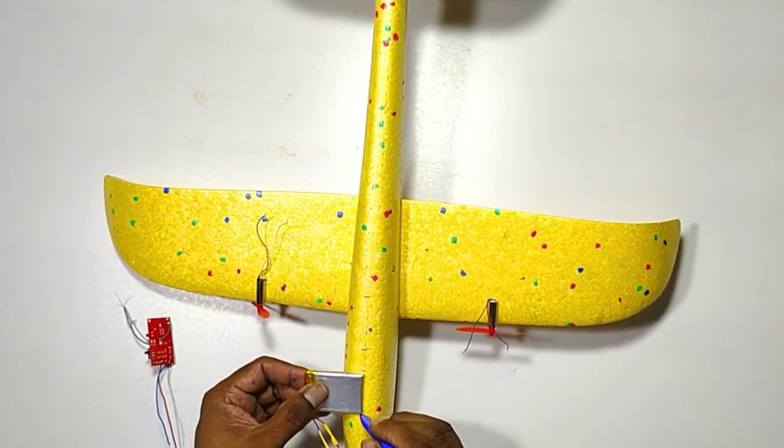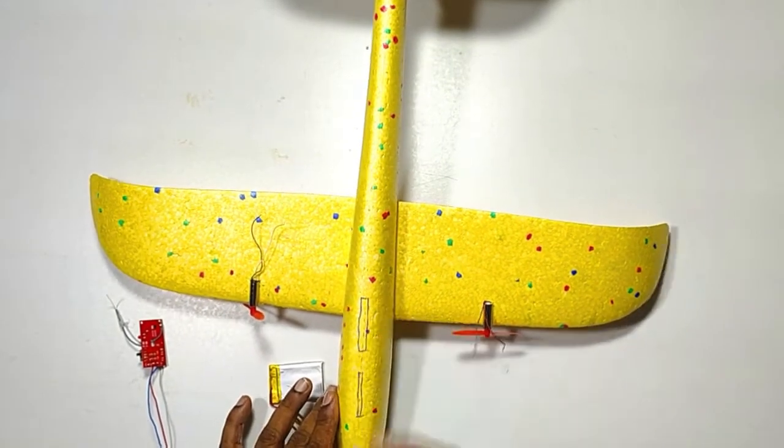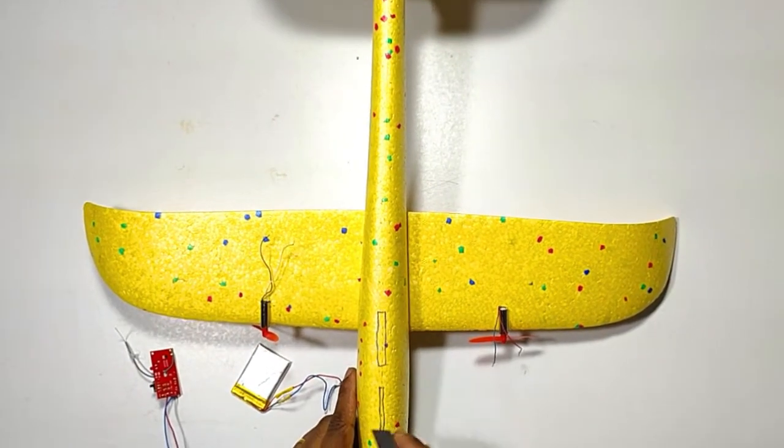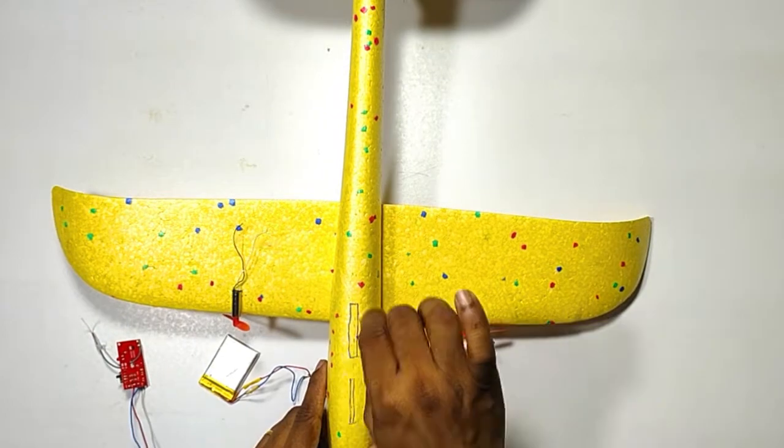Now we have to make two slots for keeping receiver and battery. So mark the slots as we did. And we need to cut the slots using knife.